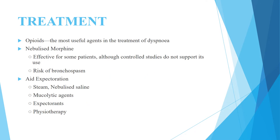Treatment. Opioids — the most useful agents in the treatment of dyspnea. Nebulized morphine: effective for some patients, although controlled studies do not support its use. Risk of bronchospasm.